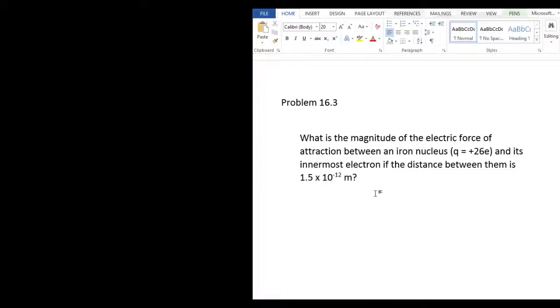Chapter 16, problem number 3 asks: What is the magnitude of electric force of attraction between an iron nucleus, q equals plus 26e, and its innermost electron if the distance between them is 1.5 times 10 to the negative 12 meters?